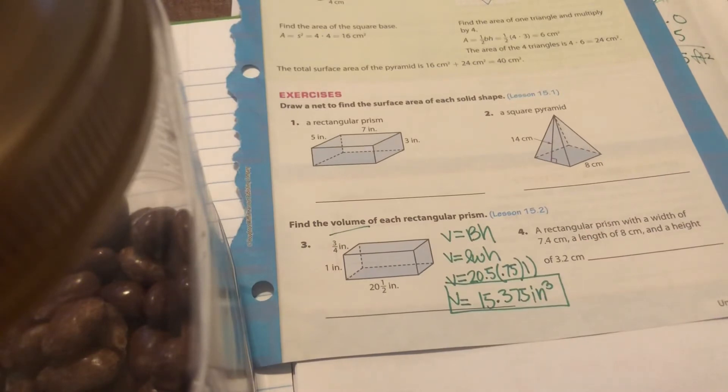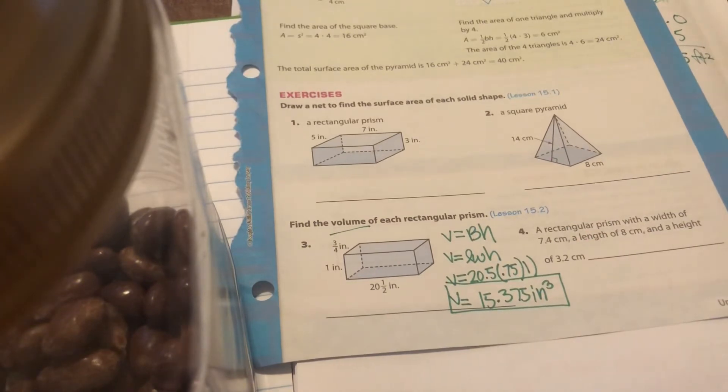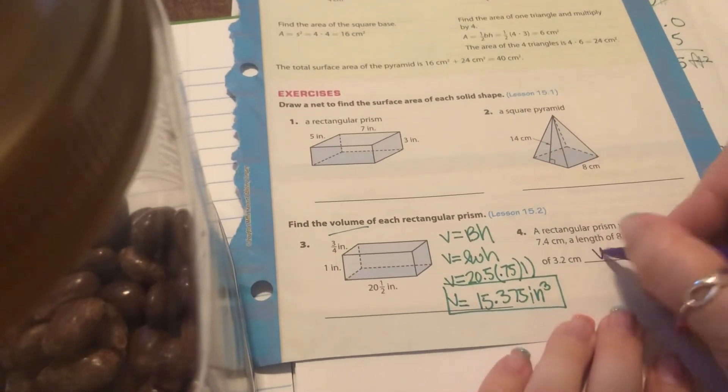They could give it to you in a drawing or they could give it to you in a word problem format, but they're still asking you to find the volume. It's a rectangular prism again, so same formula: length times width times height.